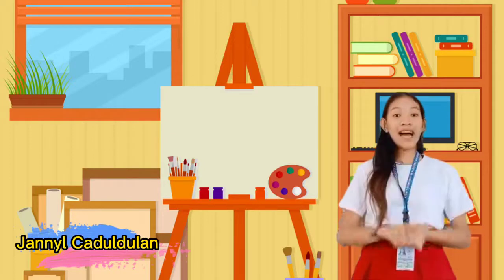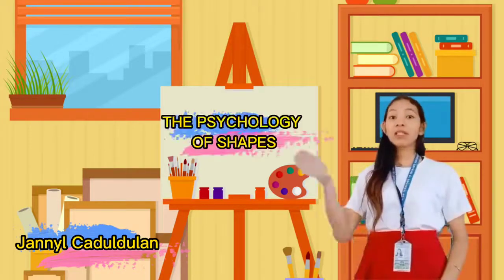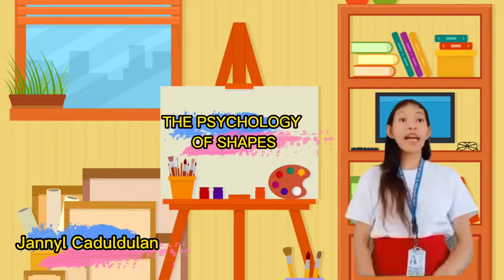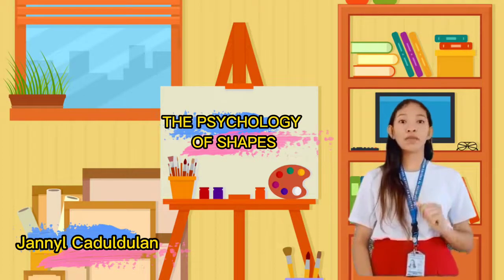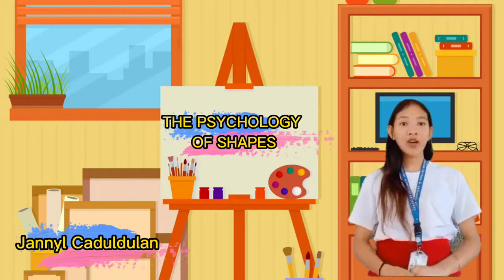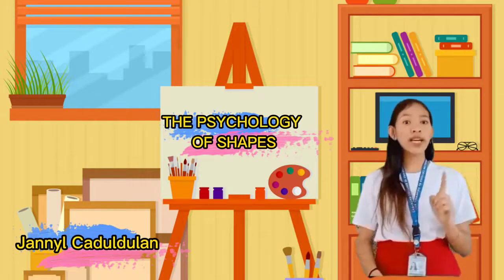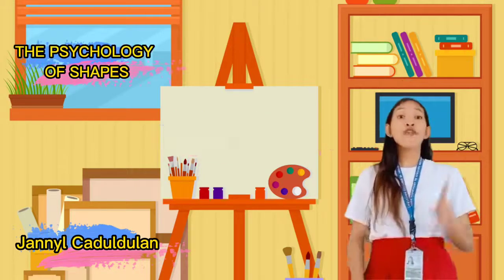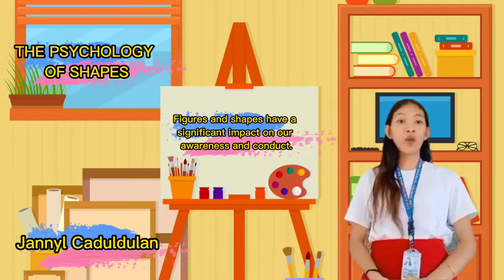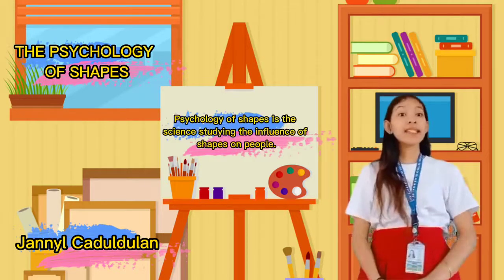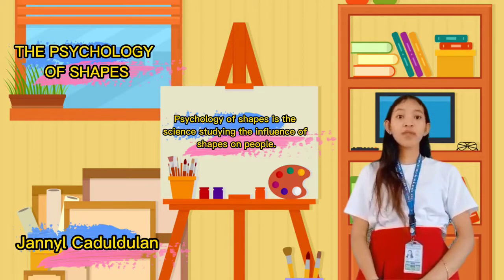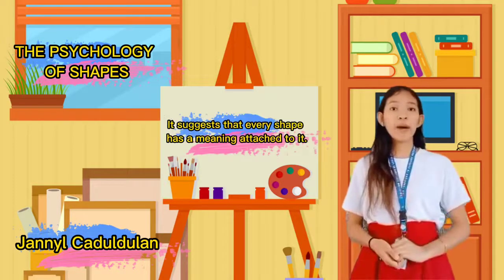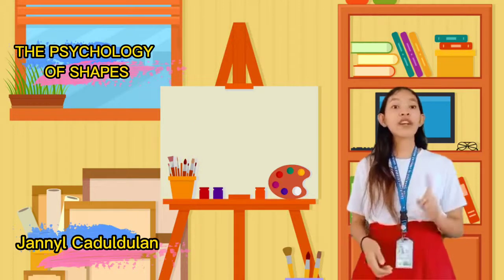Now may I call on Janiel Kaduldulan to present her output in front of the class? Good morning to all of you. I am Janiel Kaduldulan and I am your reporter for today's discussion. My topic is all about the psychology of shapes. It is possible to perceive and analyze every visual element in terms of shape — like if you wish to design a house icon, the instant thought is a rectangle with a triangle on top. Figures and shapes have a significant impact on our awareness and conduct. Psychology of shapes is the science studying the influence of shapes on people. It suggests that every shape has a meaning attached to it, which influences our mind and reactions differently.